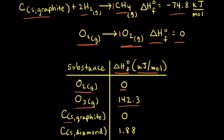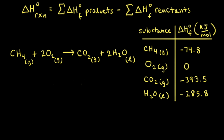Graphite is the most stable form of carbon under standard conditions; therefore, it has a standard enthalpy of formation of zero. Diamond also exists under standard conditions, but it's not the most stable form, so its standard enthalpy of formation is not zero — it's 1.88 kilojoules per mole. Enthalpies of formation can be used to calculate the change in enthalpy for a chemical reaction.